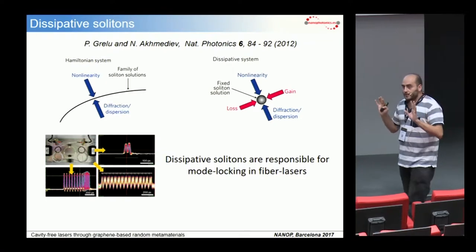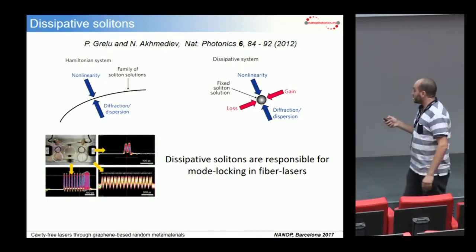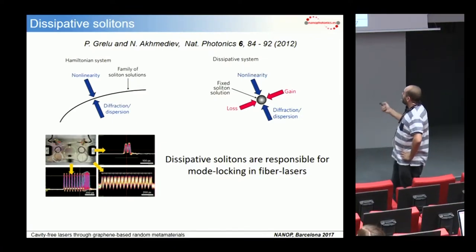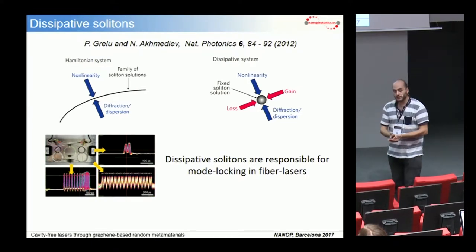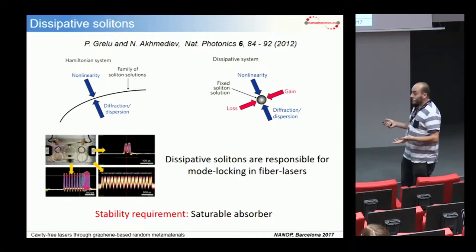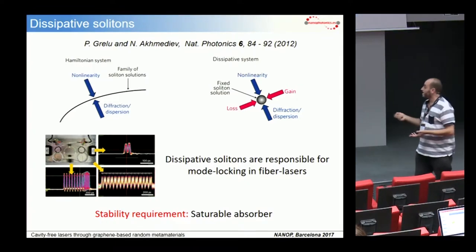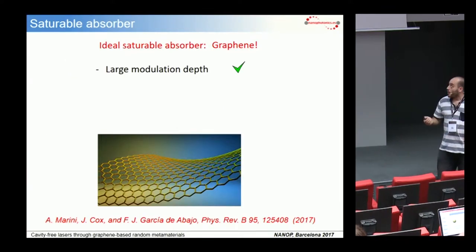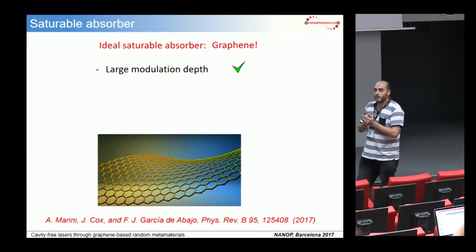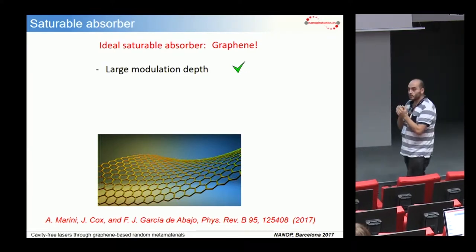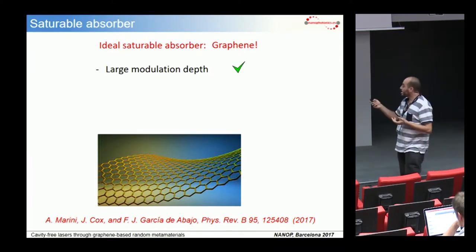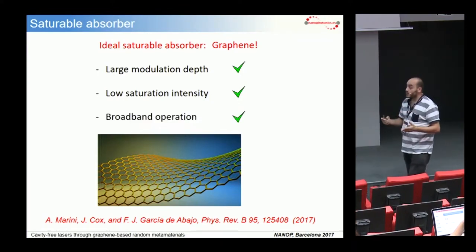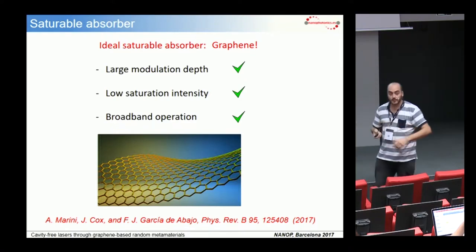Although this concept might look abstract and impractical, dissipative solitons are at the core of mode locking in fiber lasers. From this research field it is well known that there exists a stability requirement for their existence, which is the embedding of a saturable absorber. This leads us to our setup. We use graphene mainly because it is an ideal saturable absorber: it has a large modulation depth, a very low saturation intensity, and it enables broadband operation thanks to its always-resonant band structure.